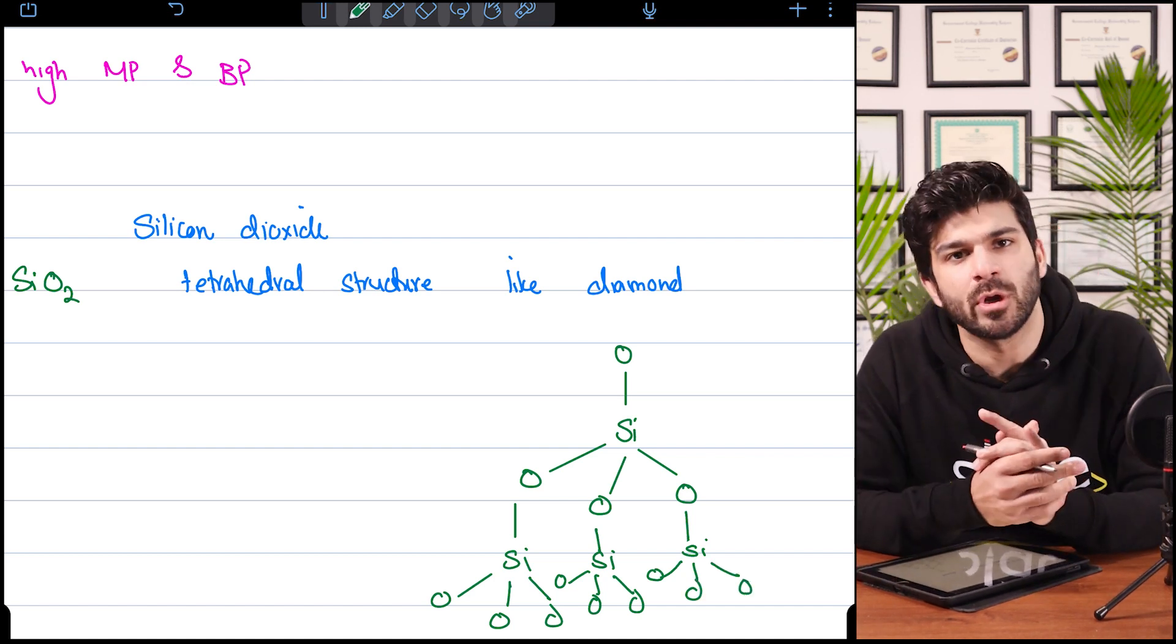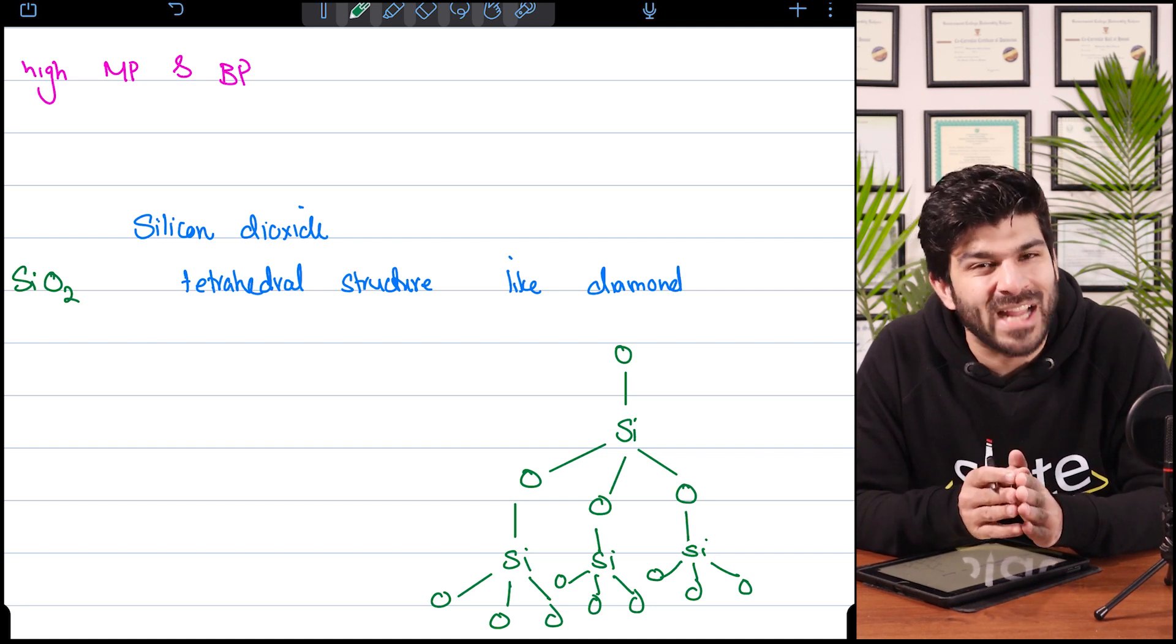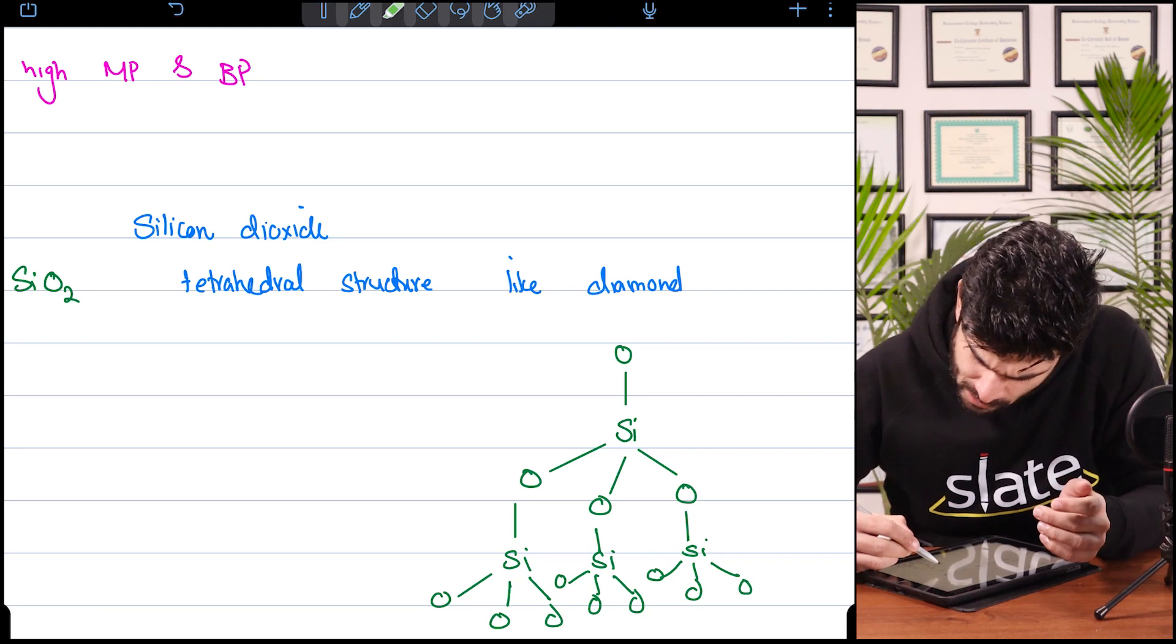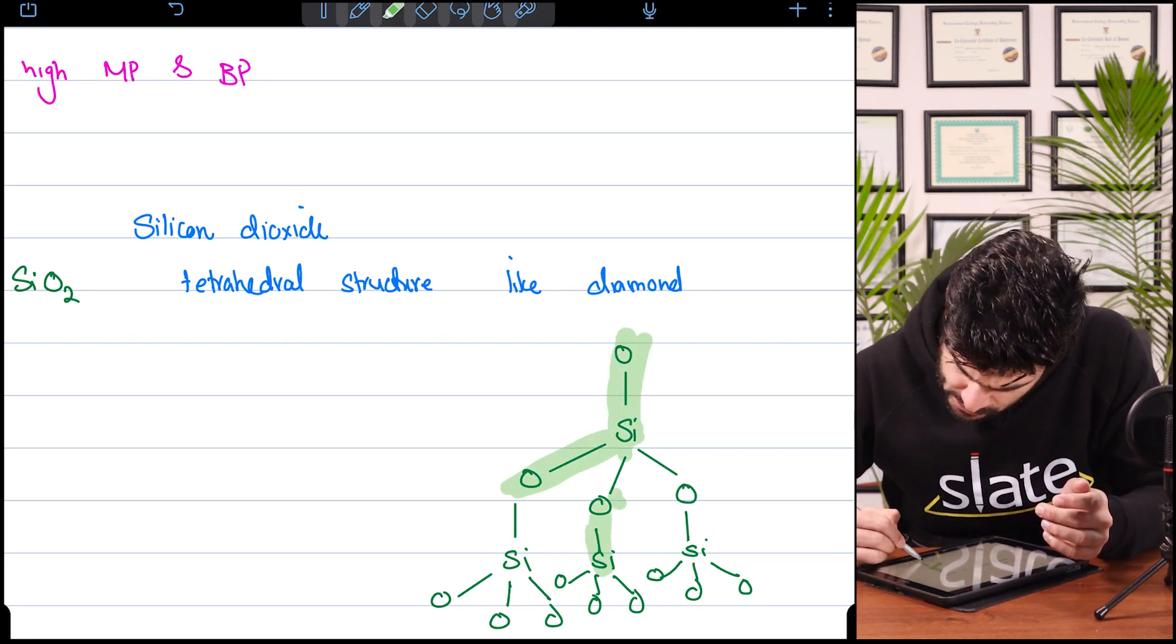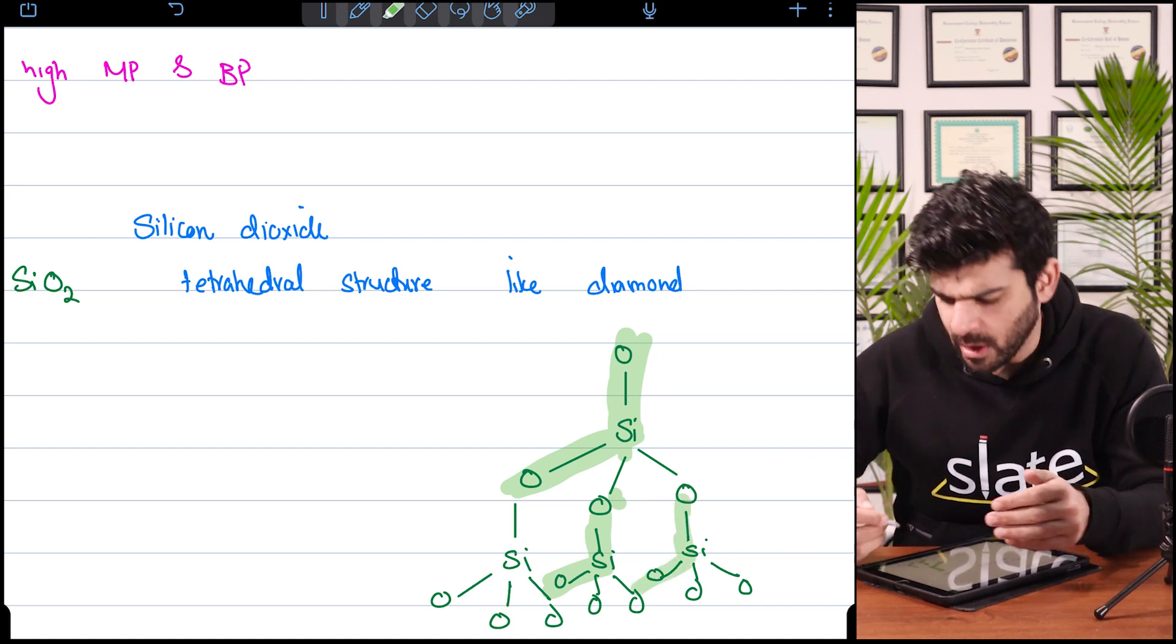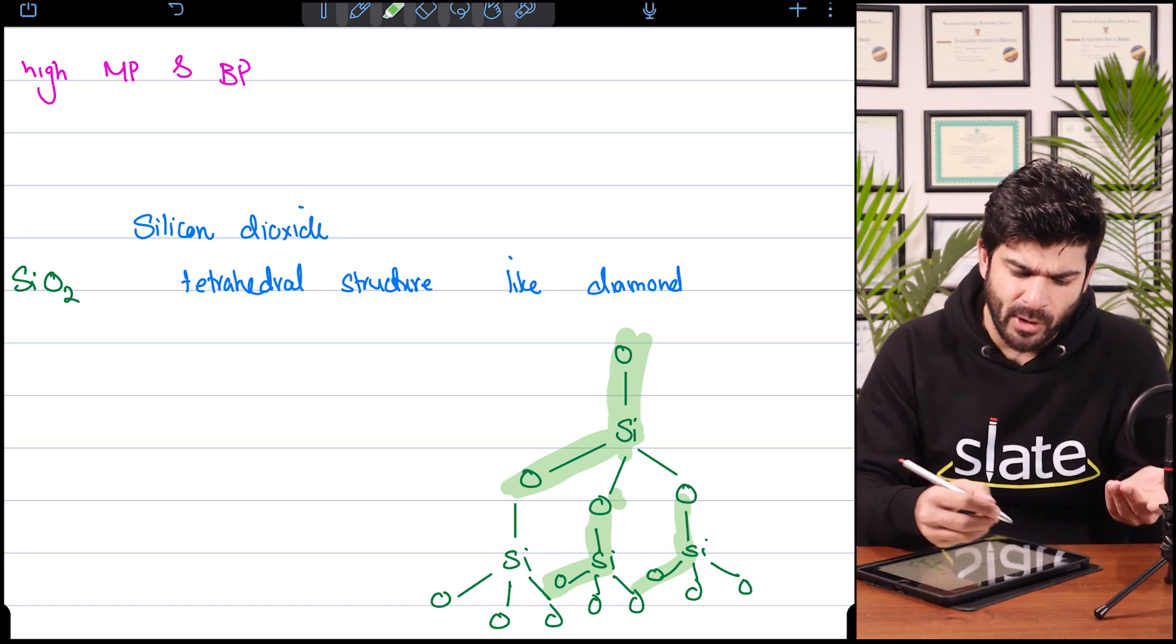That's how the bonding in silicon is like, similar to that of diamond. But when we talk about the formula, this is one formula, this is one formula, this is one formula. The lower oxygens will have their own silicon, and that's why it's SiO2.